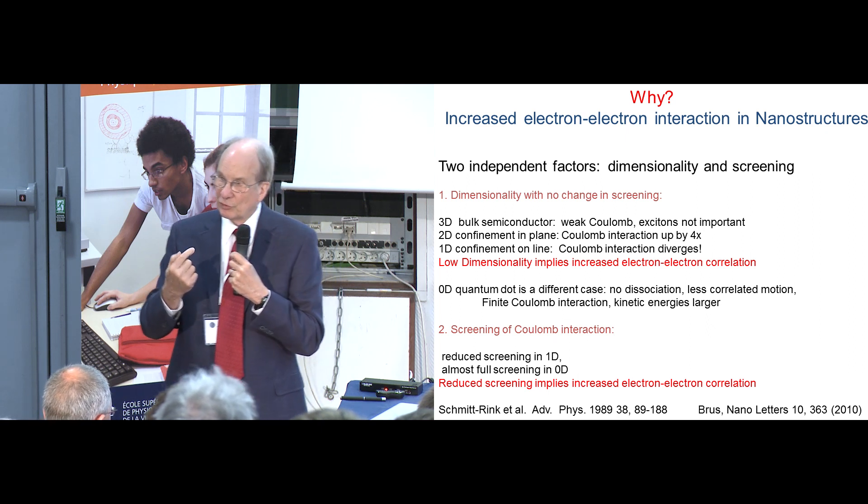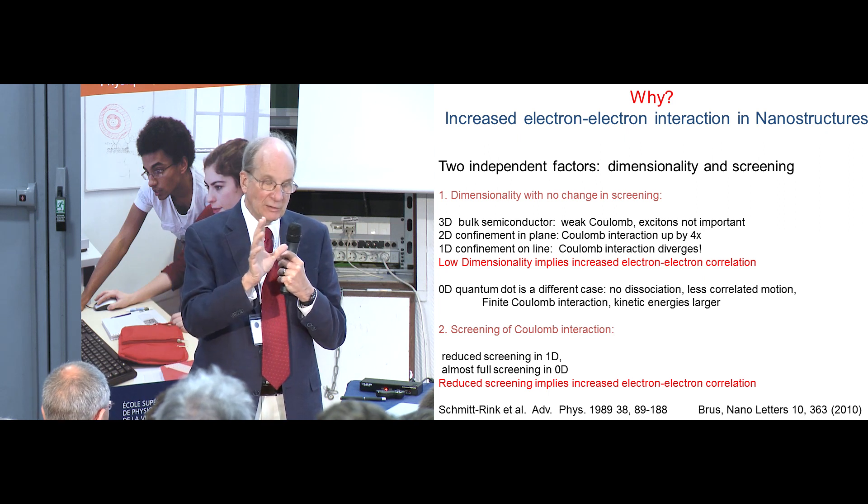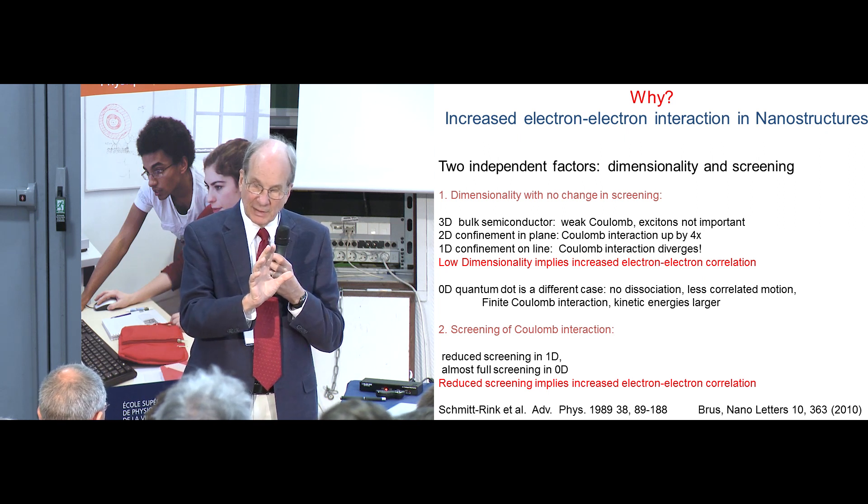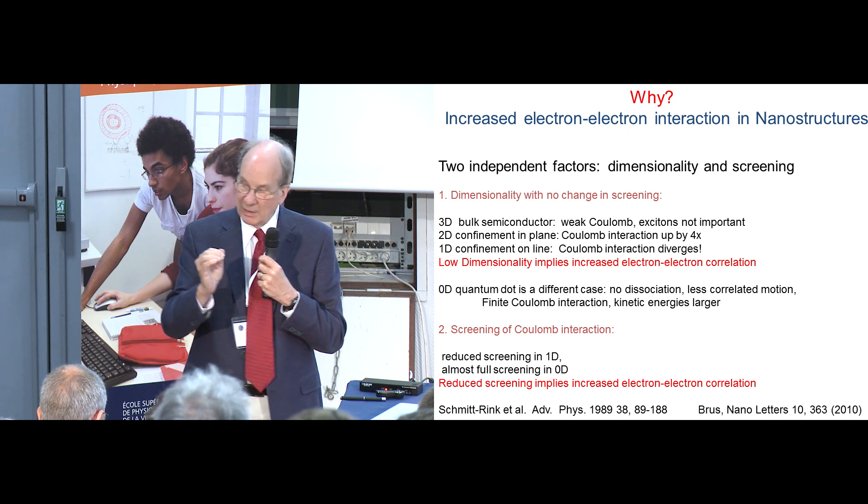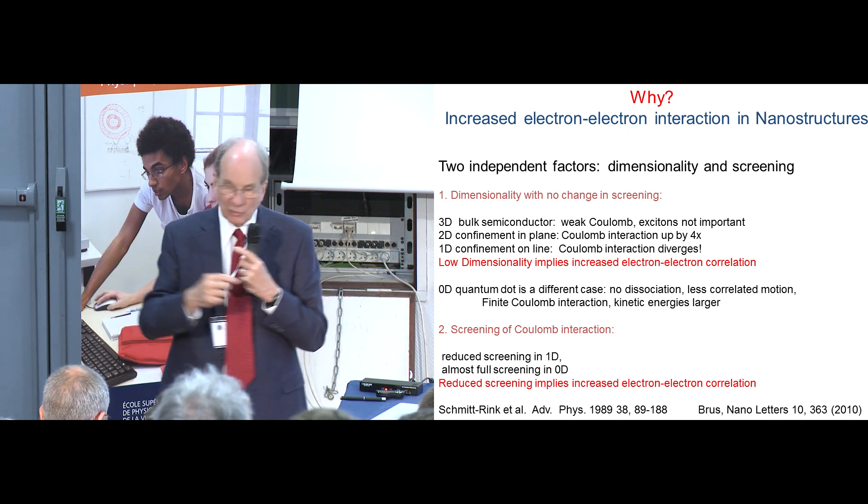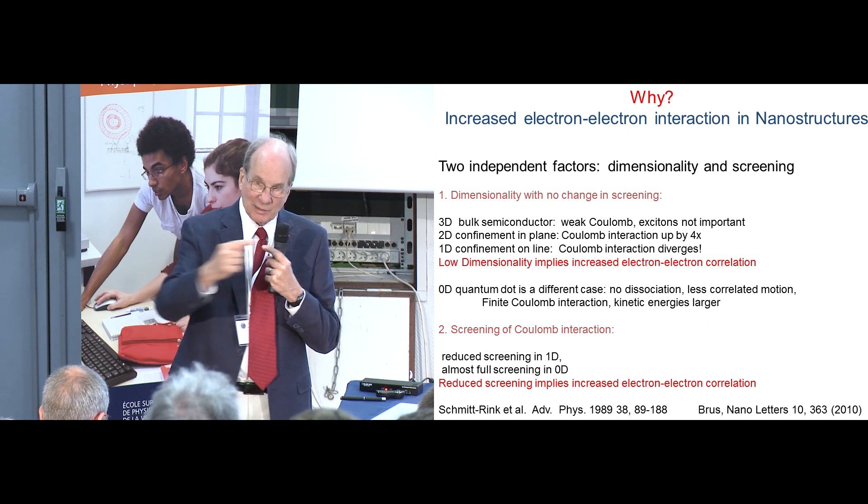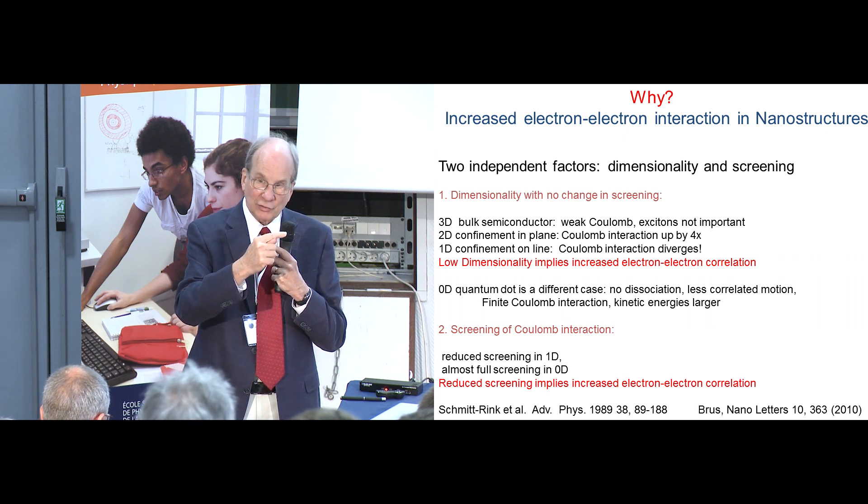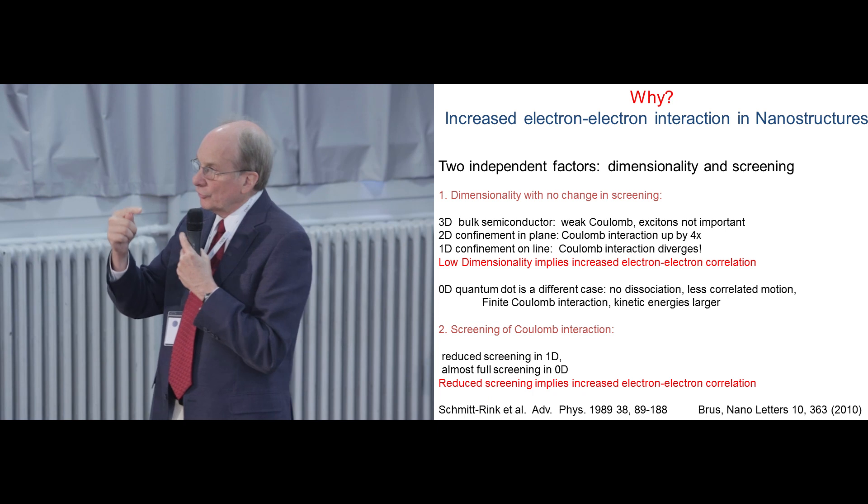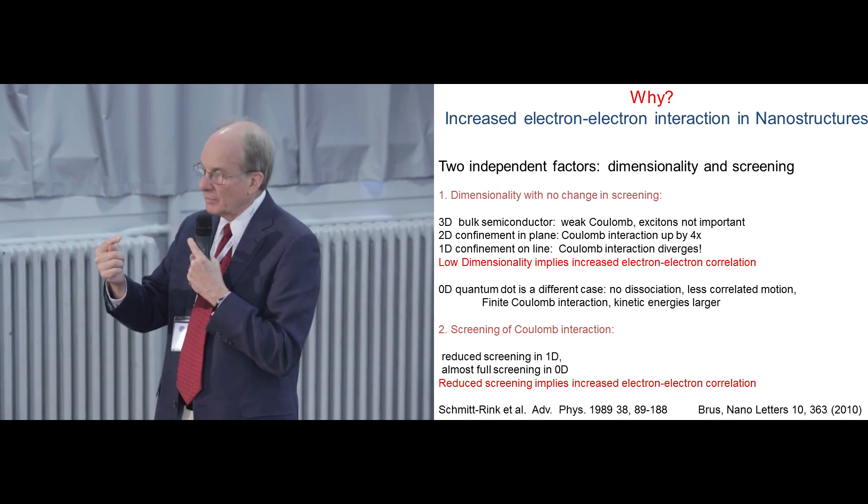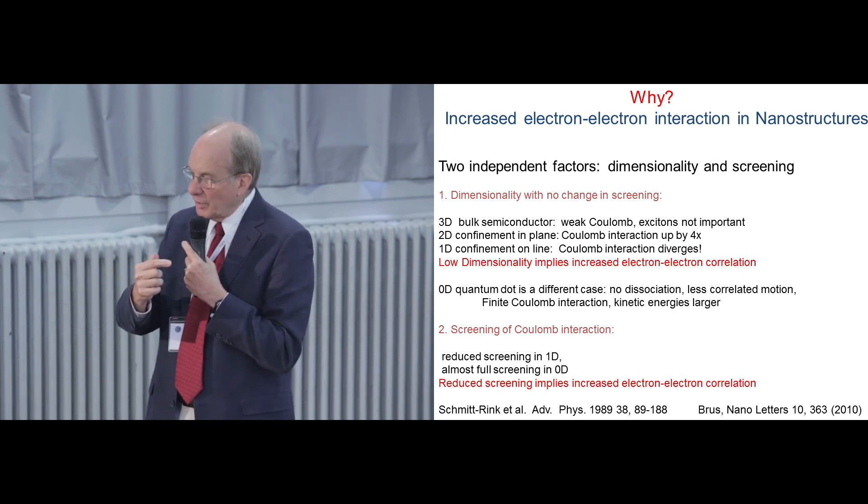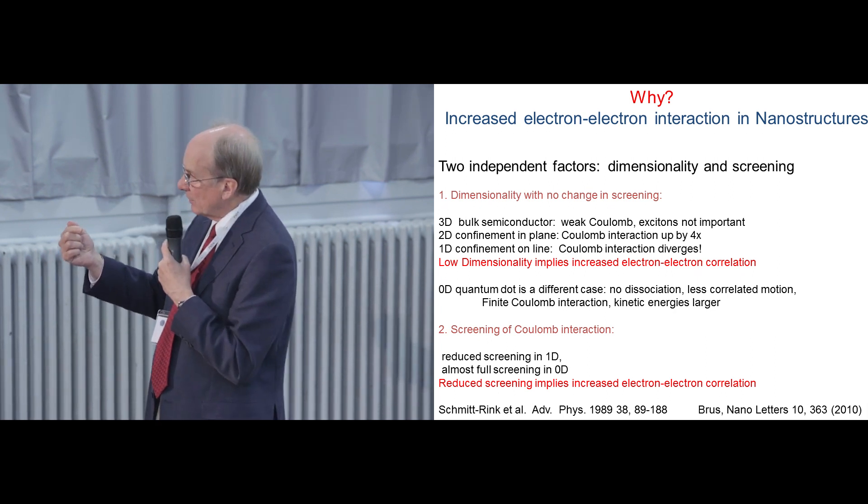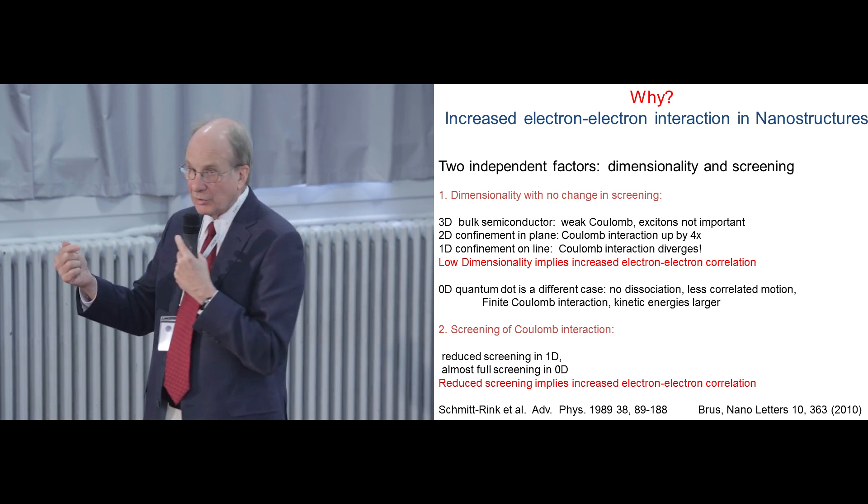If you do the same thing in one dimension, you consider motion along a line in gallium arsenide, the Coulomb energy actually diverges. So for this kind of argument, pure dimensionality of the balance between kinetic energy and Coulomb, one dimension is best, and the carbon nanotube is in that limit. It's almost a one-dimensional system.